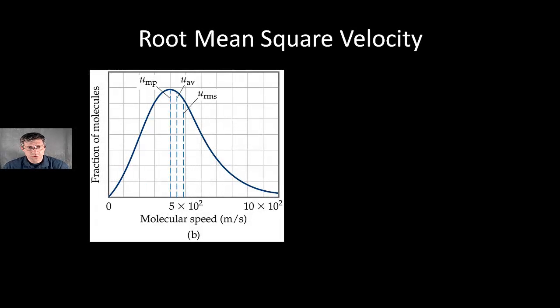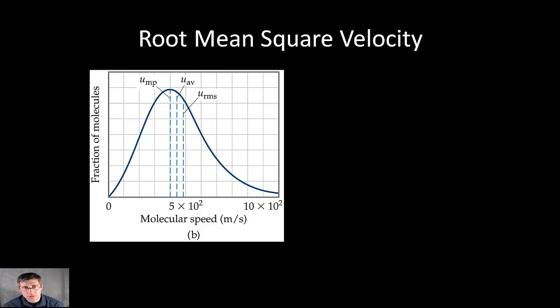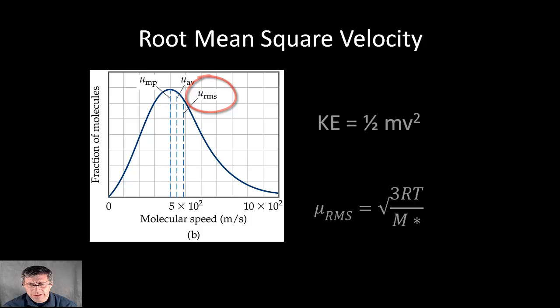There are several different things we could pick, so we could pick the maximum value on this distribution of molecular speeds. We could pick the average, which is a reasonable thing, or we can use the root mean square, which physicists like to use because it takes into account positive and negative values and allows you to have a slightly higher maximum. We'll give it a curly Q symbol here, the cursive U, the mu symbol, and it's going to be equal to some relationship to the kinetic energy. Our formula is going to be the square root of 3RT divided by the molar mass.